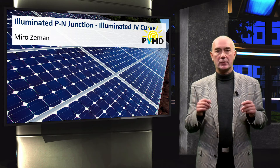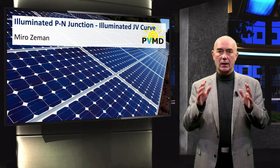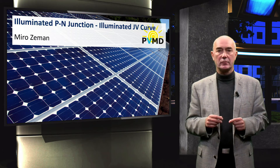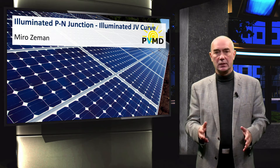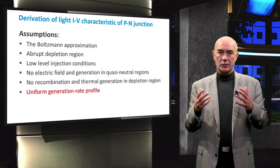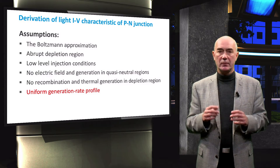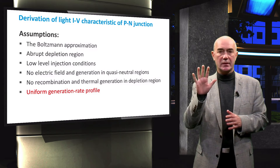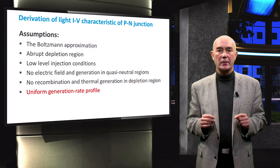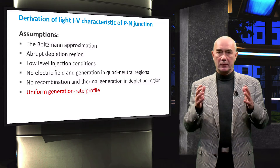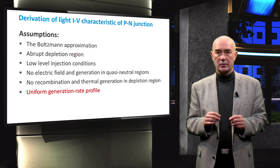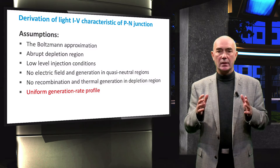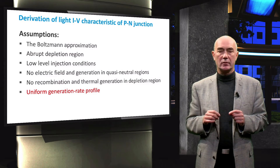We come to the final video on the P-N junction. It deals with the P-N junction under illumination and connected with a load. In this lecture, we will derive the charge carrier concentration in the P-N junction and the illuminated IV curve. To simplify the derivation, we have to make some assumptions. The first five assumptions are the same as we made to derive the dark IV curve. We have added a new assumption: a uniform generation rate across the whole P-N junction, called the uniform generation rate approximation.